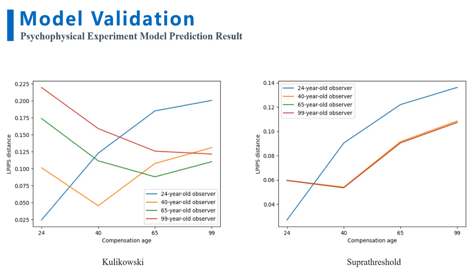Now let's look at our age-specific IQA model prediction results for the psychophysical experiment. The figure on the left shows the results using the Kulikovsky contrast matching. We can see that for the four observers we simulated, all of them prefer the compensation age which is the closest to their real age. For instance, for a 24-year-old observer, the blue curve, the LPIPS distance is the lowest for the compensation age of 24, which means that this observer has the highest perceived image quality viewing the 24-year-old compensation image. And the other compensation images might appear overly compensated for them. The figure on the right shows the results using the supra-threshold contrast matching. Here we can see that the 40, 65, and 99-year-old observers almost have the same response.